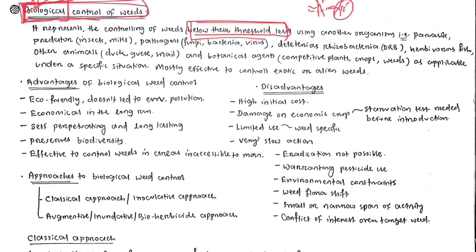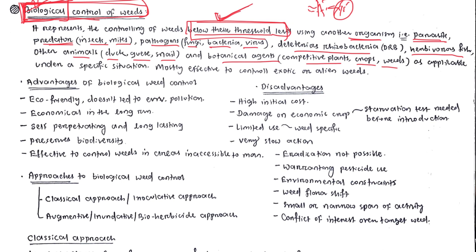In biological weed control, we release certain bio-agents — living organisms — that control weeds below their threshold level. It will not completely eradicate the weeds but will keep them below the threshold. These organisms may be any parasite, predator (like insects or mice), pathogen (like fungi, bacteria, or virus), deleterious rhizobacteria, herbivorous fish, other animals, or botanical agents like competitive plants.